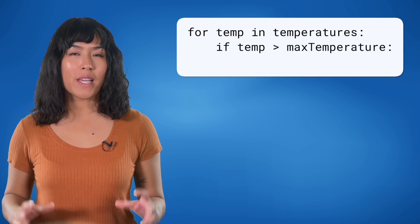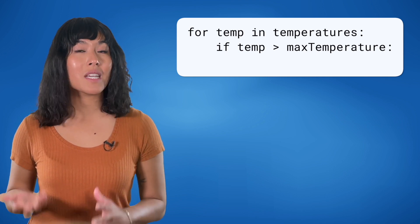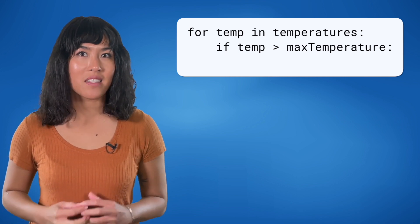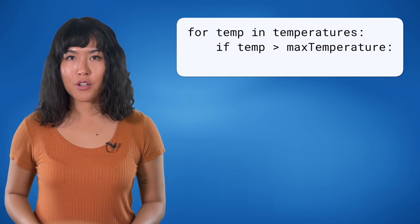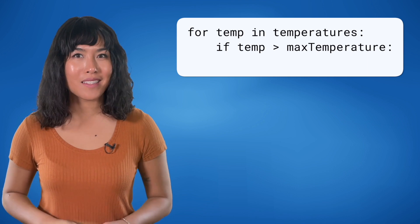Inside the loop, we compare the current temperature, temp, with our assumed highest temperature, max temperature. We ask, is the current temperature, temp, higher than our assumed highest max temperature?